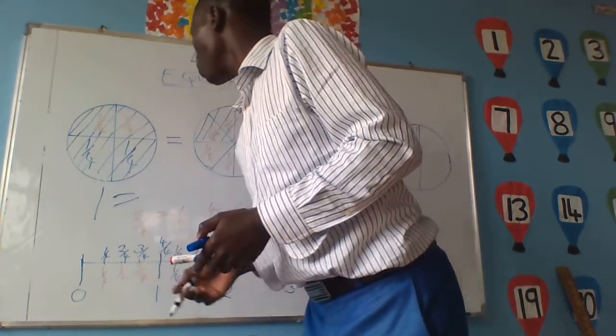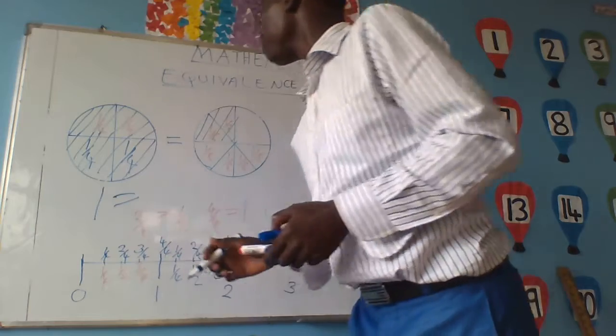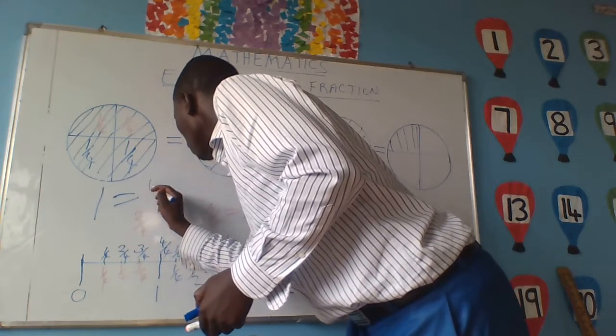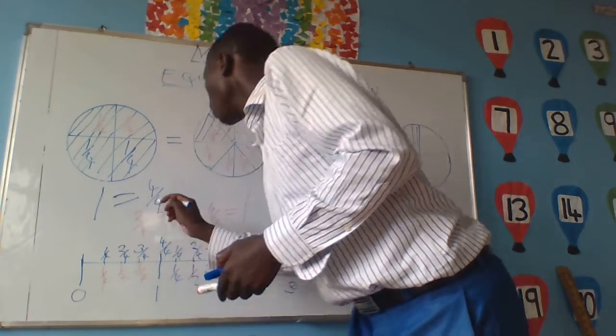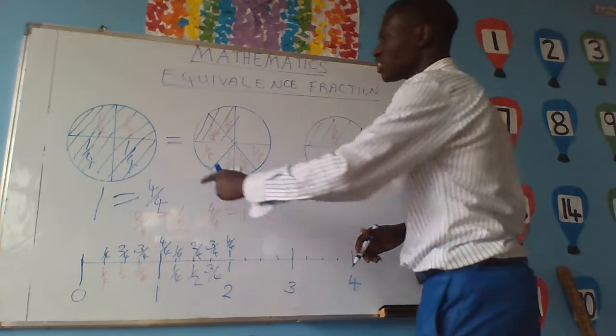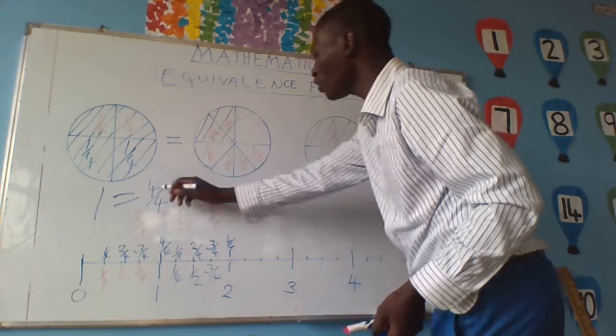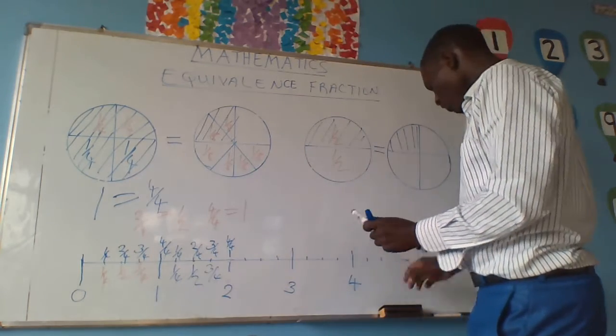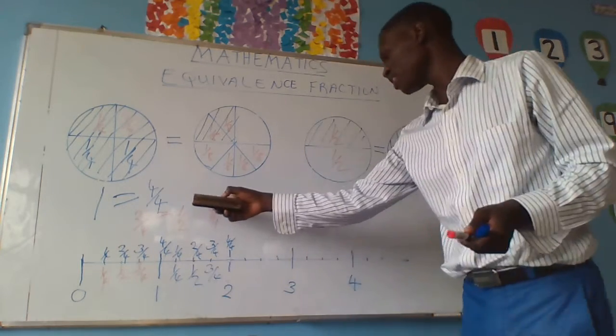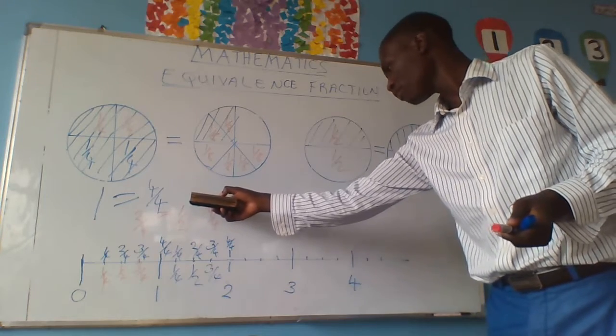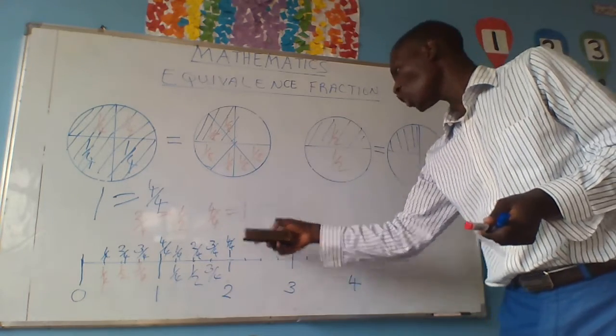To 4 out of 4 quarters. This one whole figure will be equivalent to 4 out of 4. That is equivalent, as we have seen, even in a number, 4 out of 4 is equal to 1.